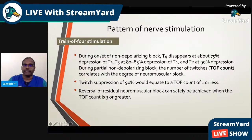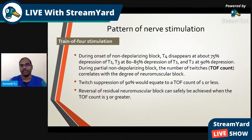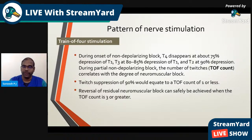During onset of non-depolarizing block, the fourth twitch disappears at about 75% depression of T1; T3 disappears at 80–85% depression, and T2 at 90% depression. During partial non-depolarizing block, the number of twitches — the TOF count — correlates with the degree of neuromuscular block. Twitch suppression of 90% equates to a TOF count of one or less. Reversal of residual neuromuscular block can safely be achieved when the TOF count is three or greater.